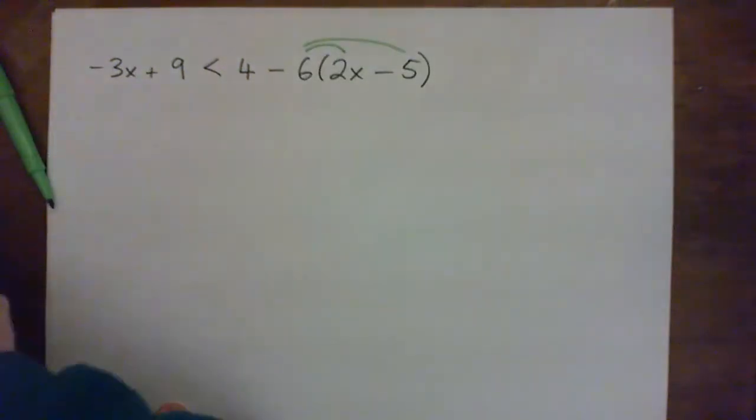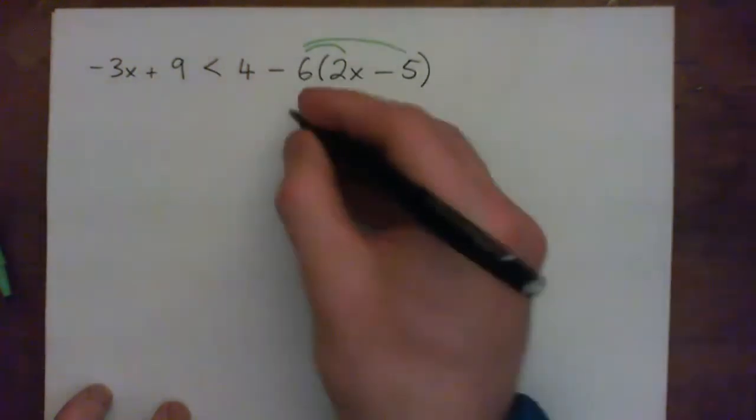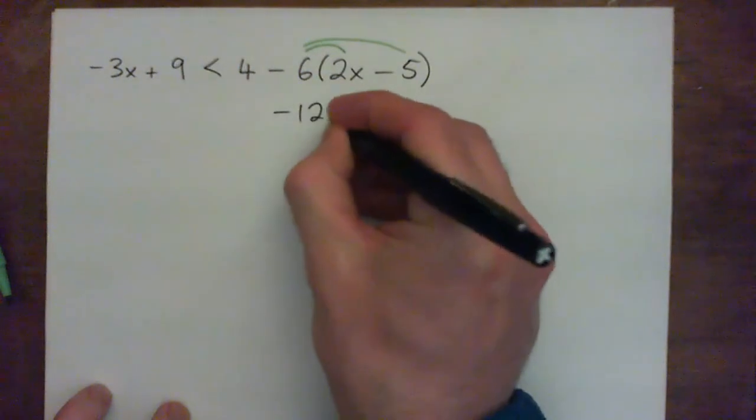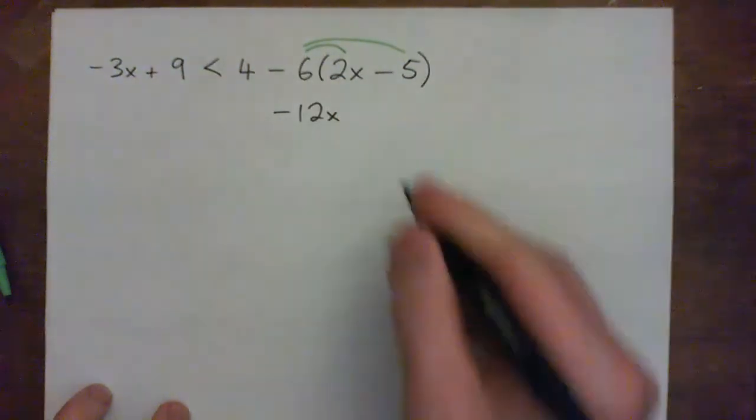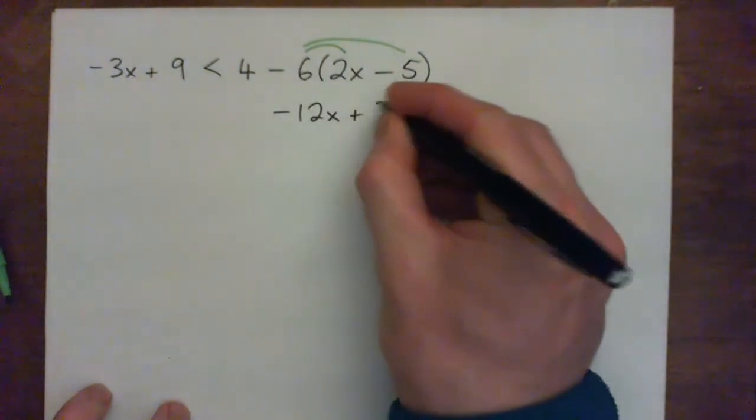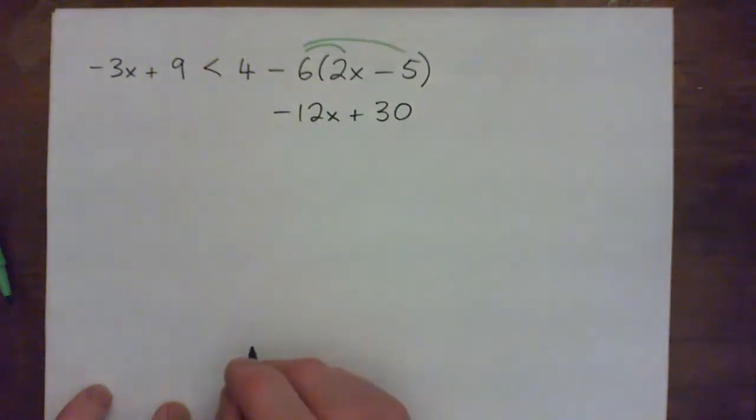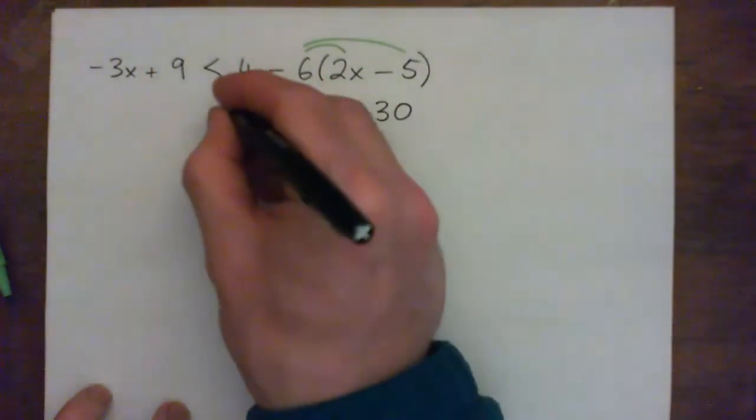So we can multiply the negative 6 in here. Negative 6 times 2x is negative 12x. Negative 6 times negative 5 is plus 30. And then we just write out the rest of the inequality.